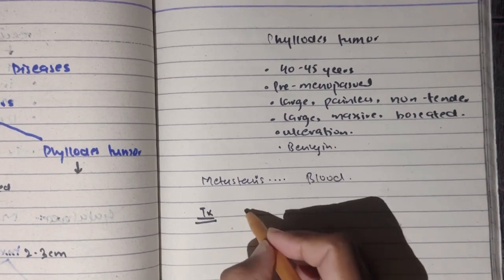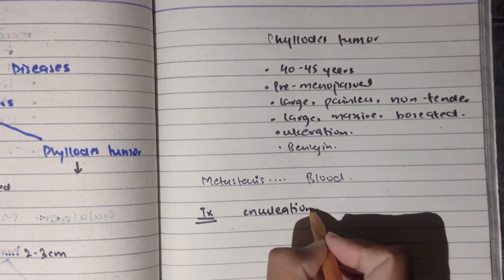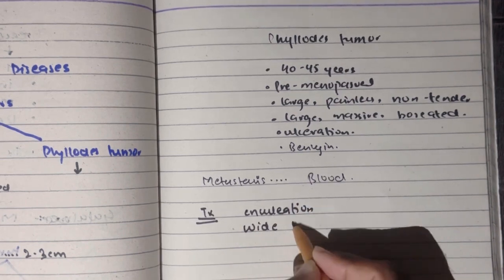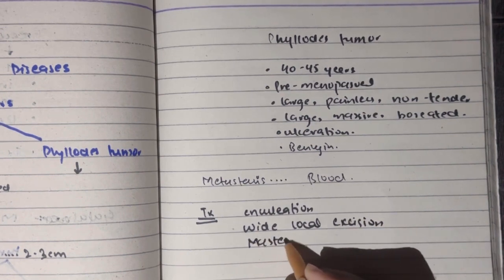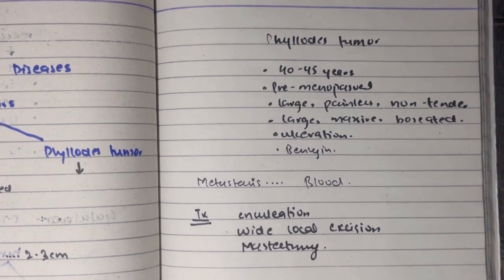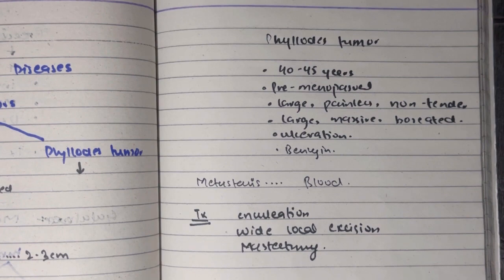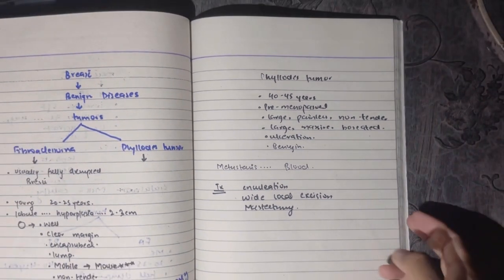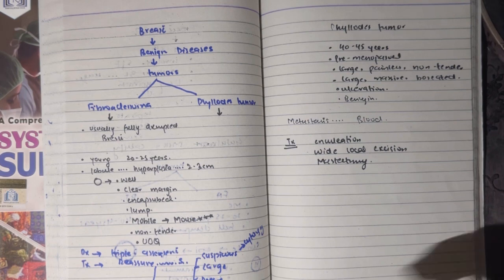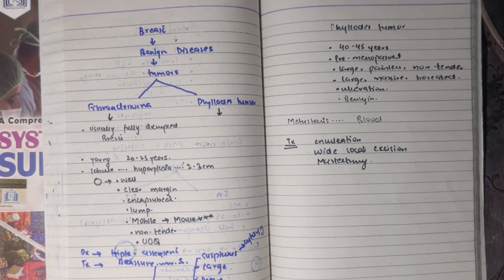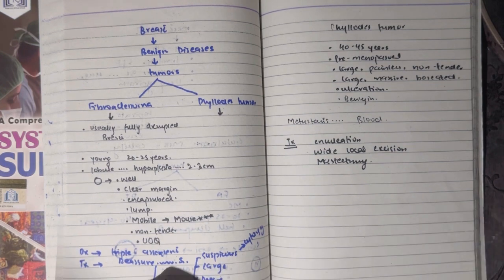In treatment we have to do enucleation. We will remove the tumor along with the normal tissue. We have to remove the tumor with wide margins. We can also do mastectomy, this is also an option. Enucleation or mastectomy. These are two benign tumors.